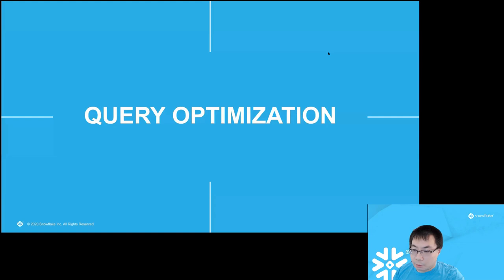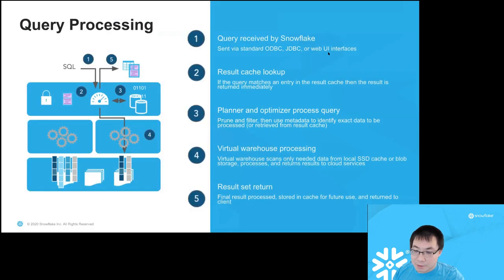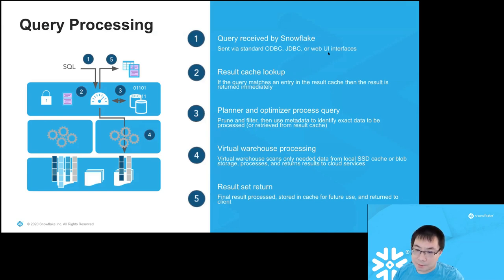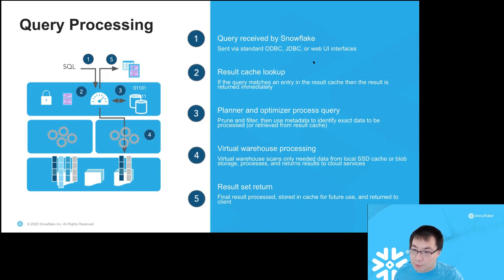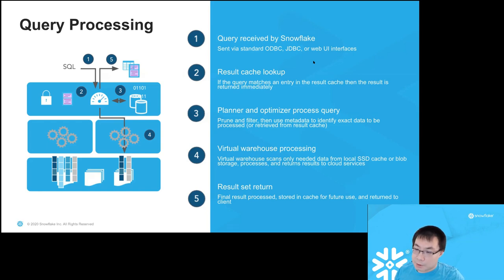Now let's go into an overview of query optimization. This is a simplified picture of the life of a query. At the top is the cloud services layer, which receives the query sent over clients — ODBC, JDBC, WebUI, Python, and others; we support over 10 or 15 clients and hundreds of partner connectors. Once queries are sent to Snowflake, we do a lightweight compilation that does a result cache lookup. We check whether the result of this particular query is already there, and if so, we directly return the result.